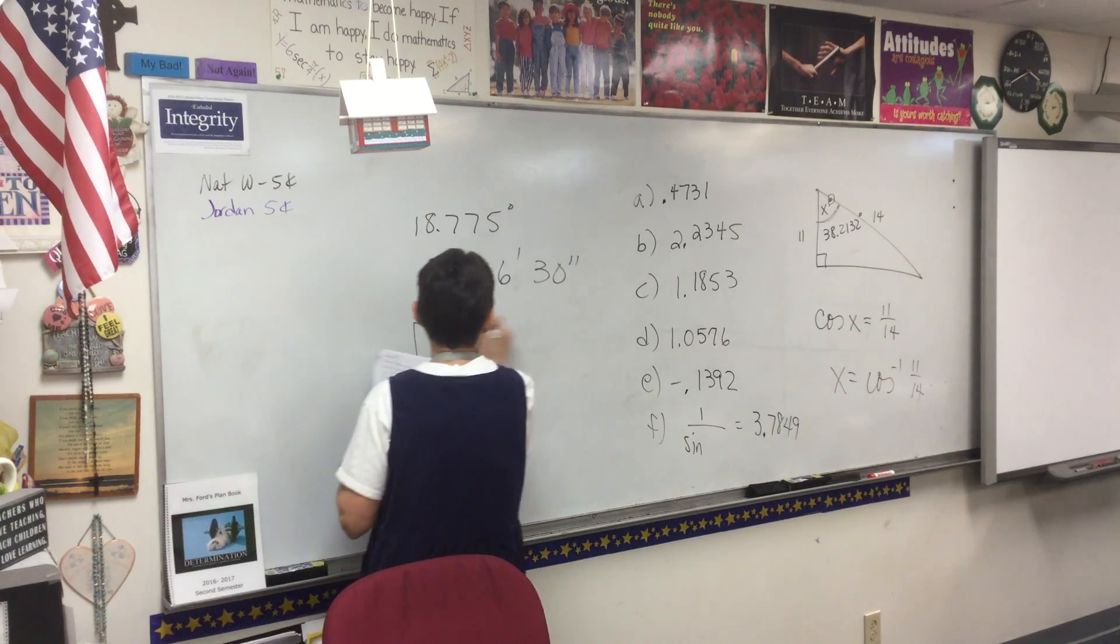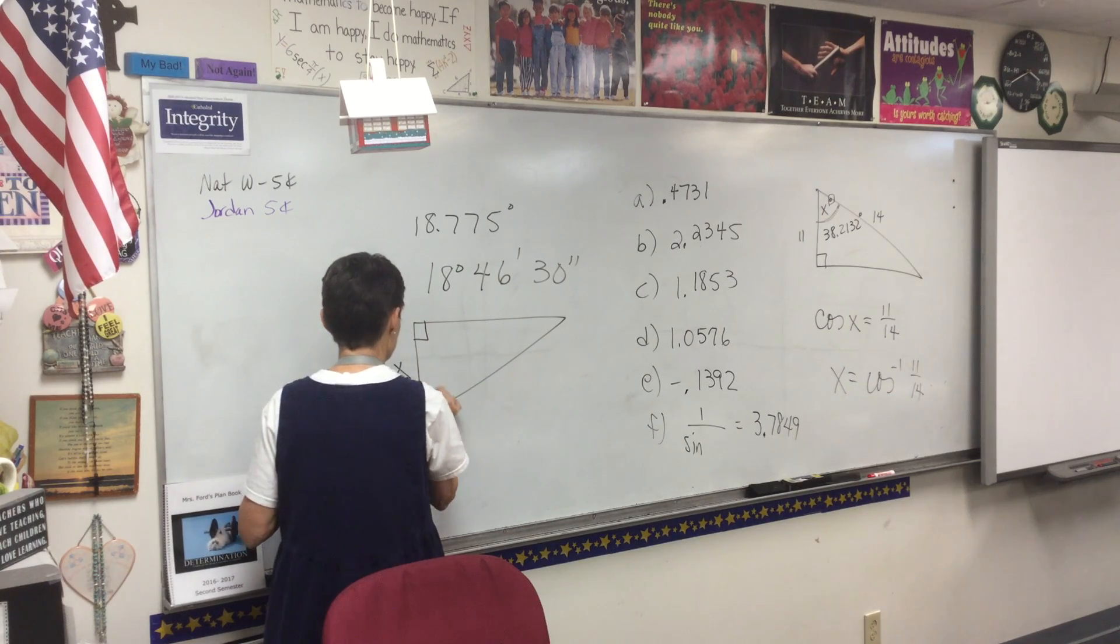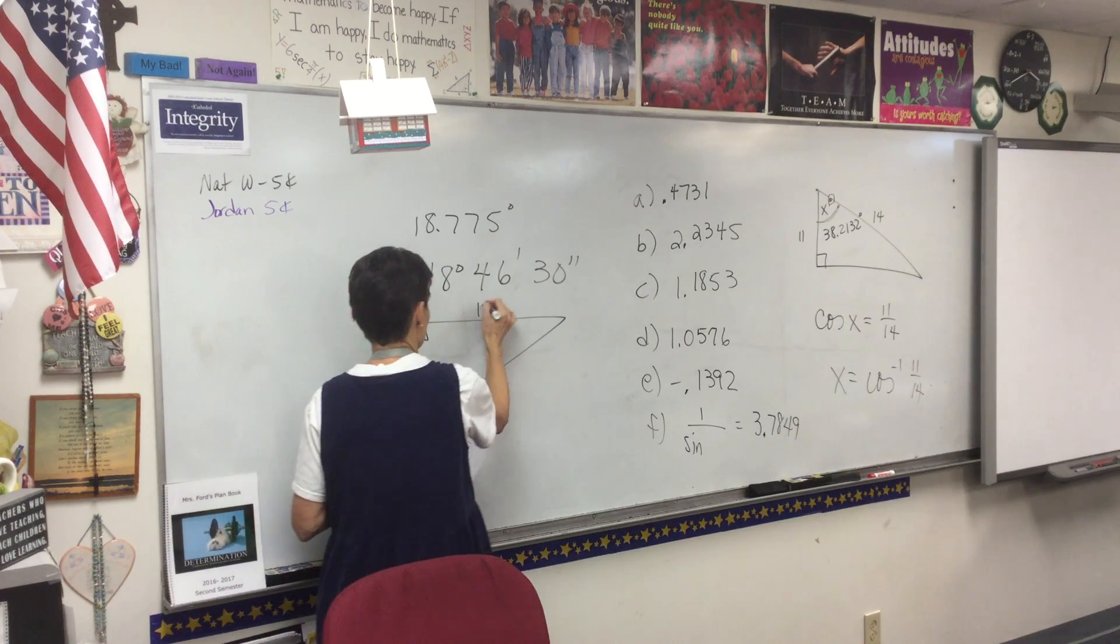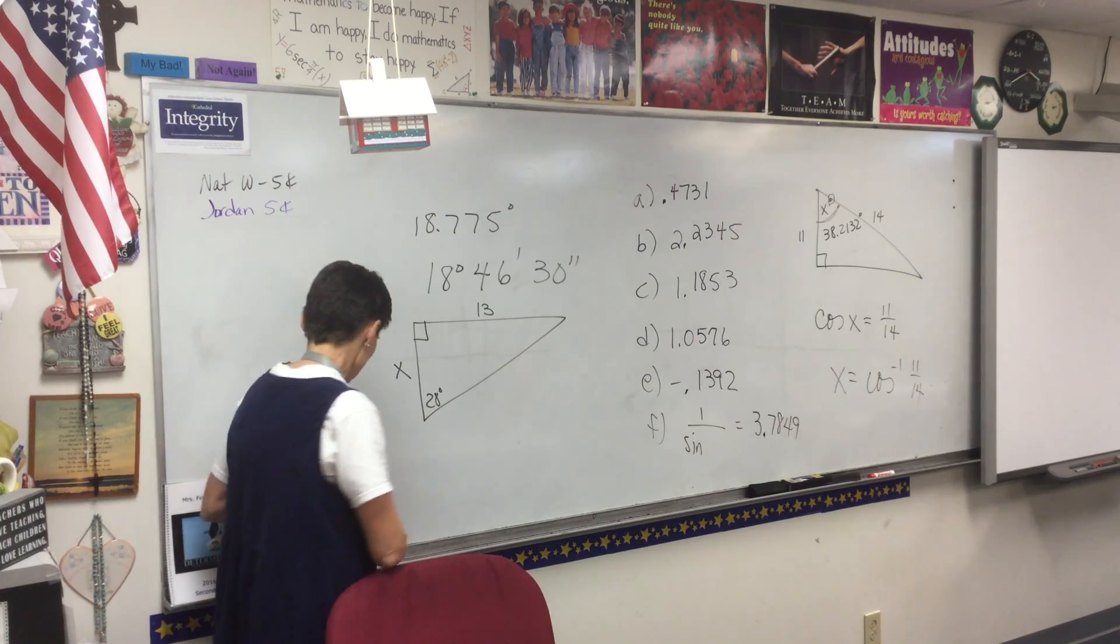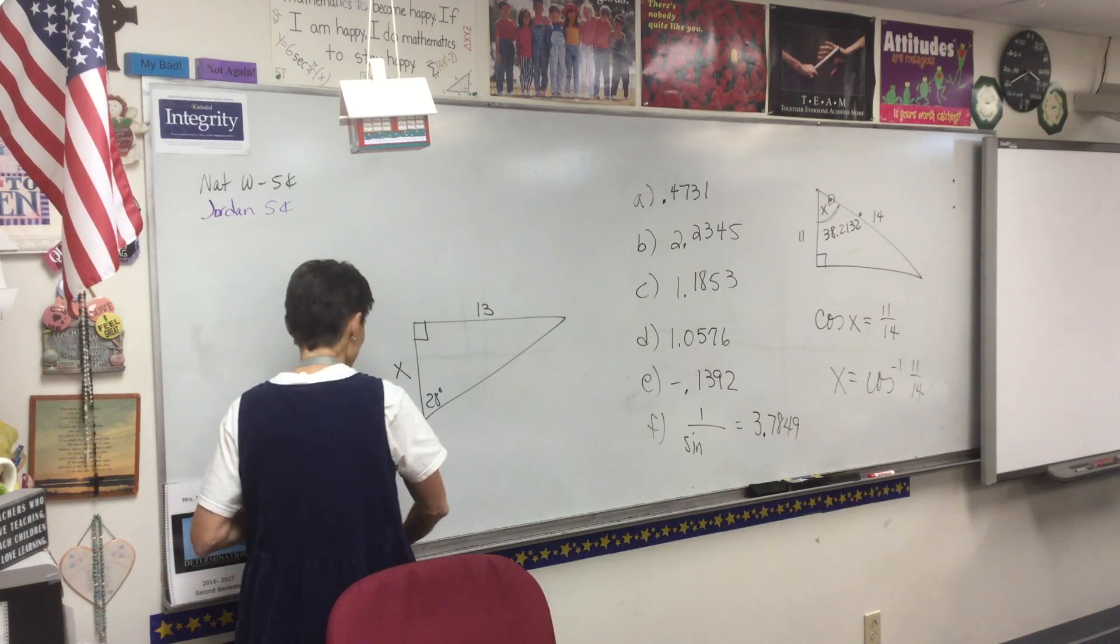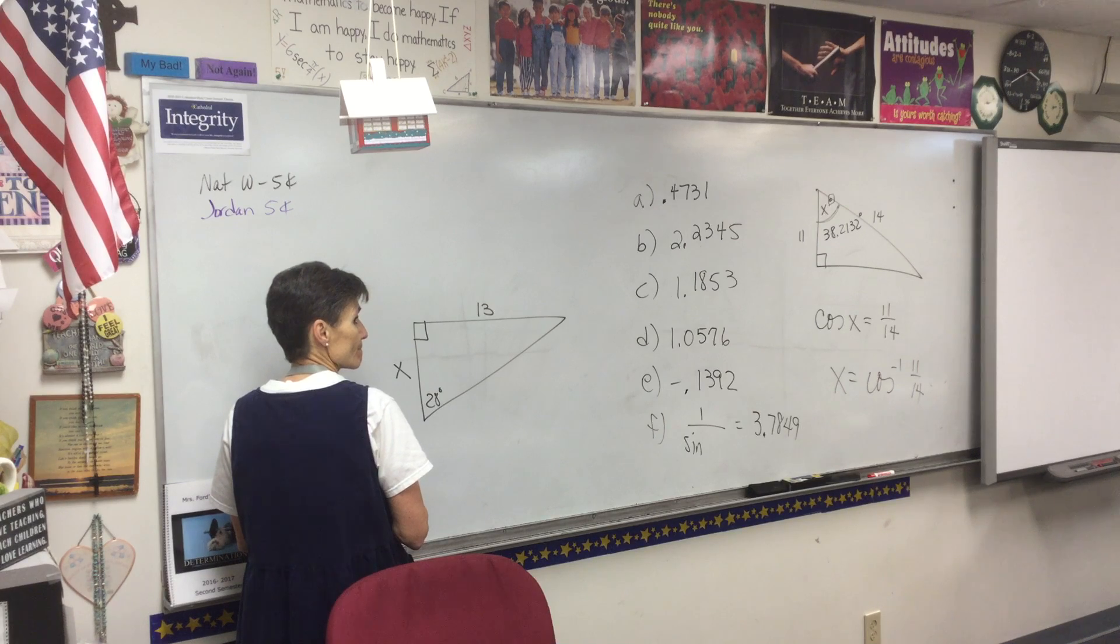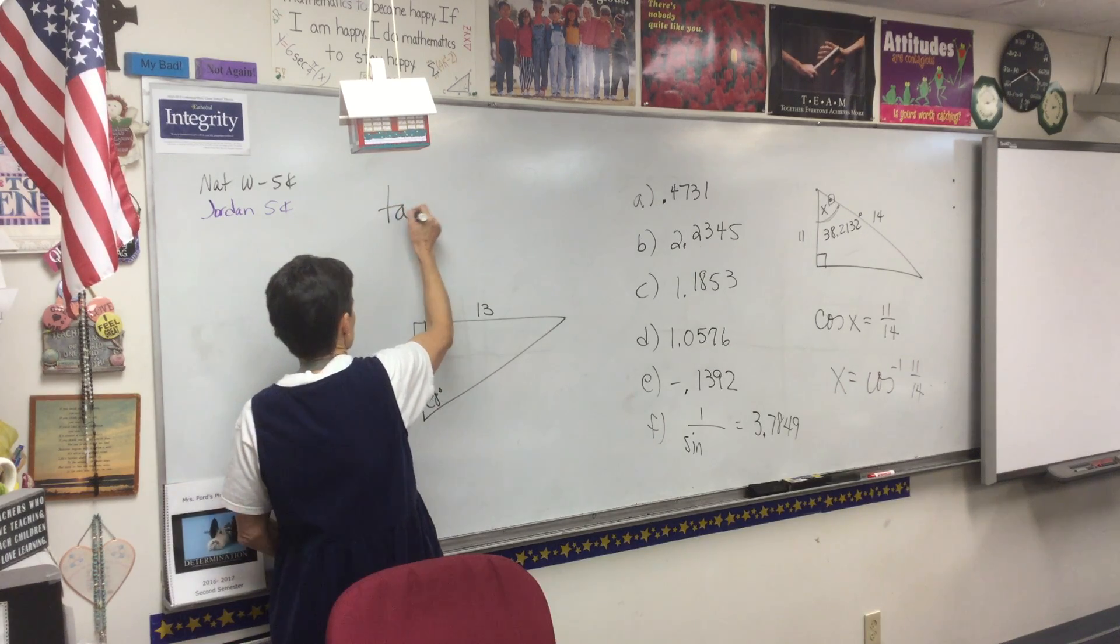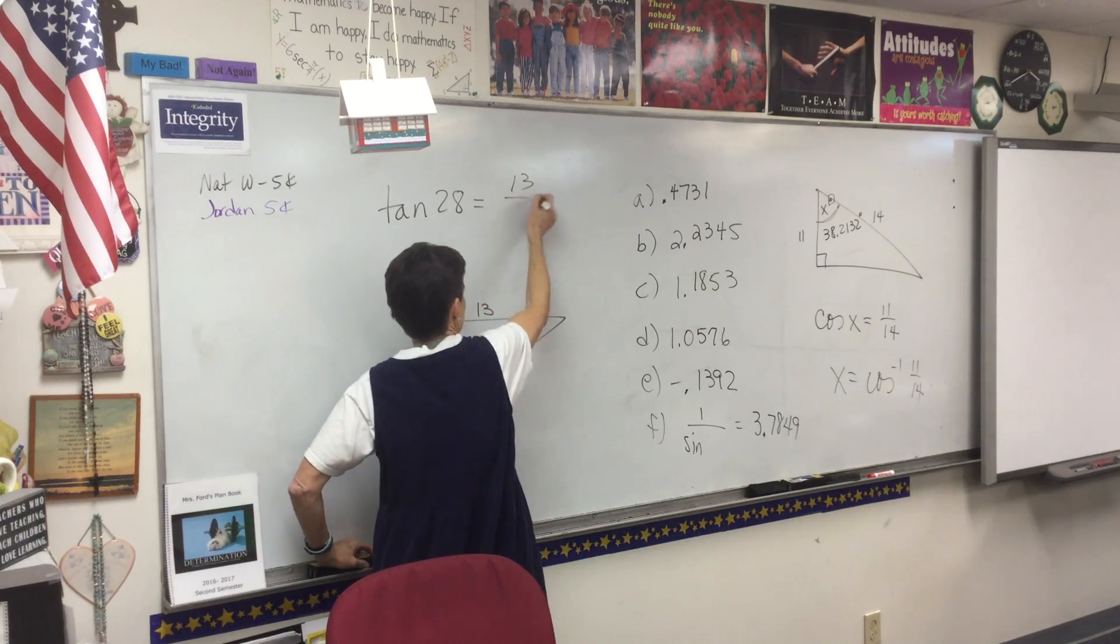Here we go. X, 28 degrees, 13. All right, we're going to write an equation for this one. Here we go, take a look at the setup here. Sine, cosine, or tangent? Tangent 28 equals 13 over x.